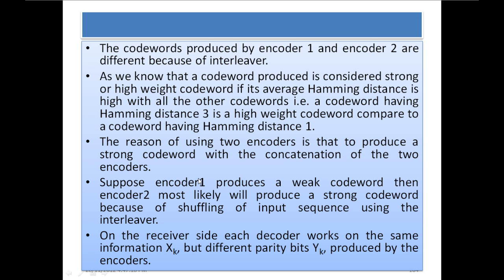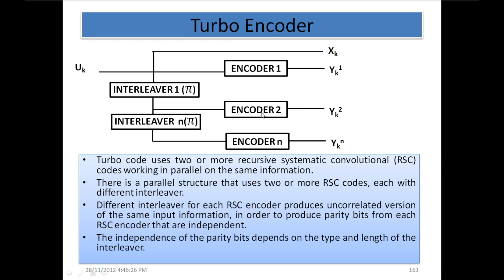The codewords produced by encoder 1 and encoder 2 are different because of the interleaver. These encoders are identical — there is no difference between them — but the outputs are different. YK1 is different from YK2 just because of this interleaver.